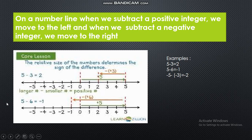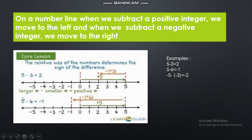What if we subtract 2 negative integers? For minus 5 minus minus 3: start at minus 5, and remember when subtracting 2 negative integers we move to the right hand side. So move 3 jumps to the right — 1, 2, 3 — and we get the answer minus 2.